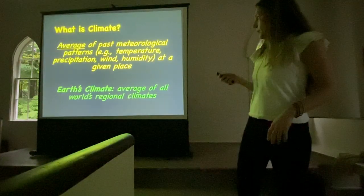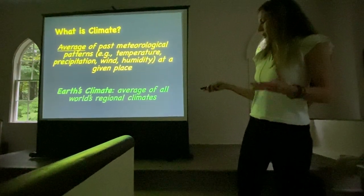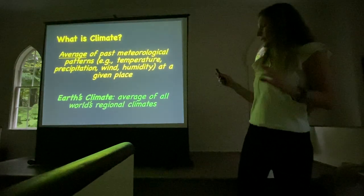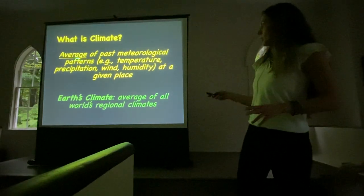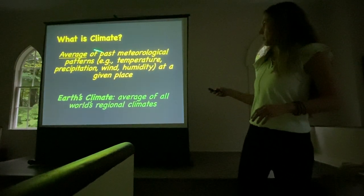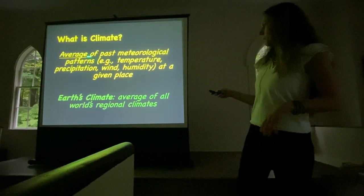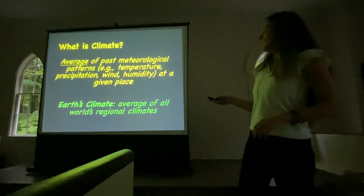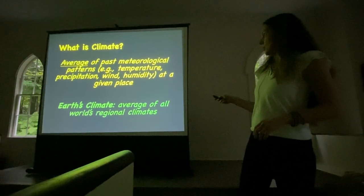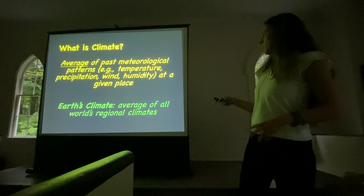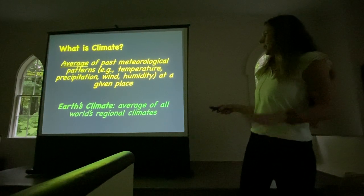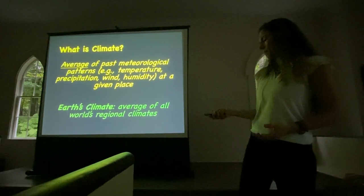Climate itself — the technical definition is the average of different meteorological patterns. So, for example, the average of temperature, precipitation, wind, humidity, at a different place. When we talk about Earth's climate, we're thinking of the Earth as a whole.